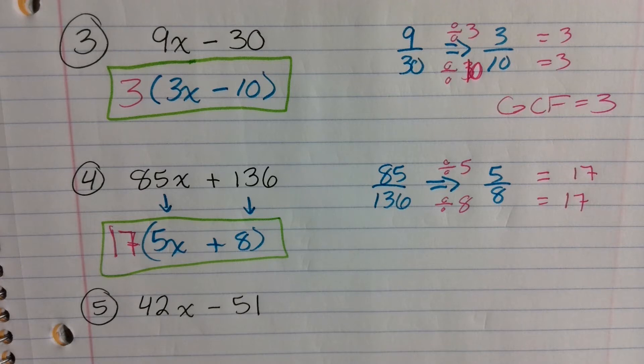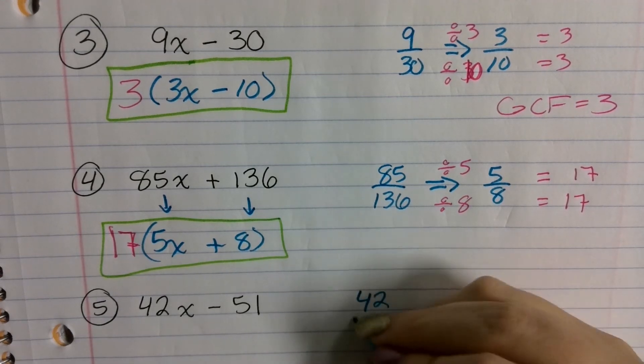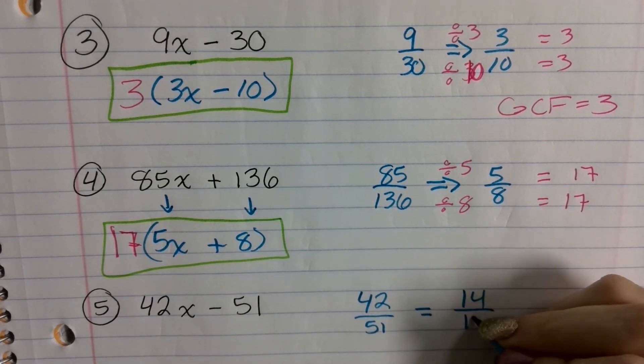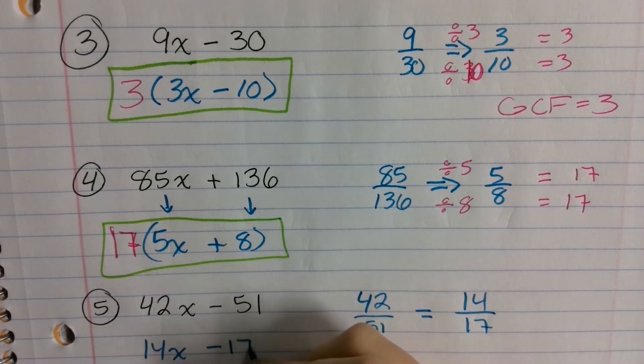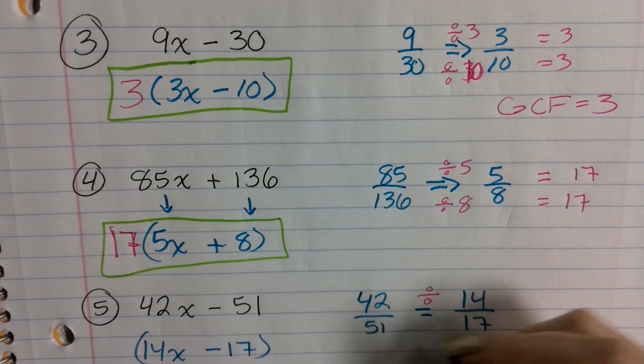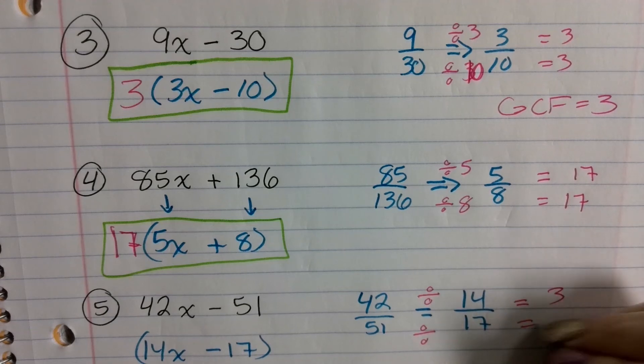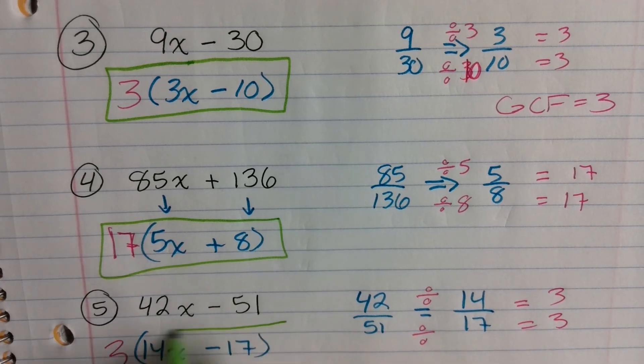Last one, Abigail. 14x minus 17. Good. So we get 42 over 51. That's going to simplify to 14 over 17. So that means the expression is 14x minus 17. And then if you divide 42 divided by 14, 51 divided by 17, that's going to equal 3 for both of them. So your greatest common factor was 3 on the outside. And then you're done.